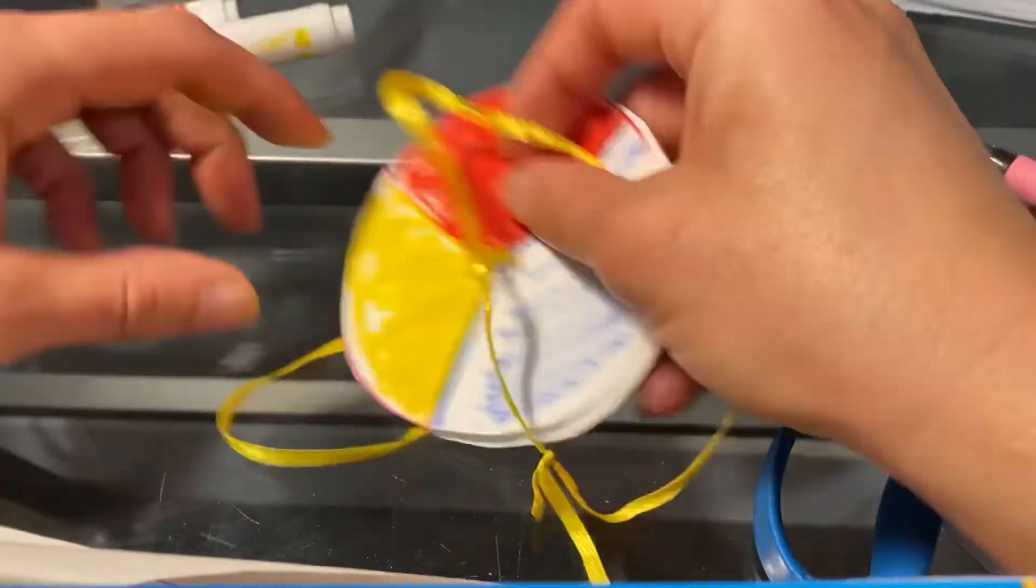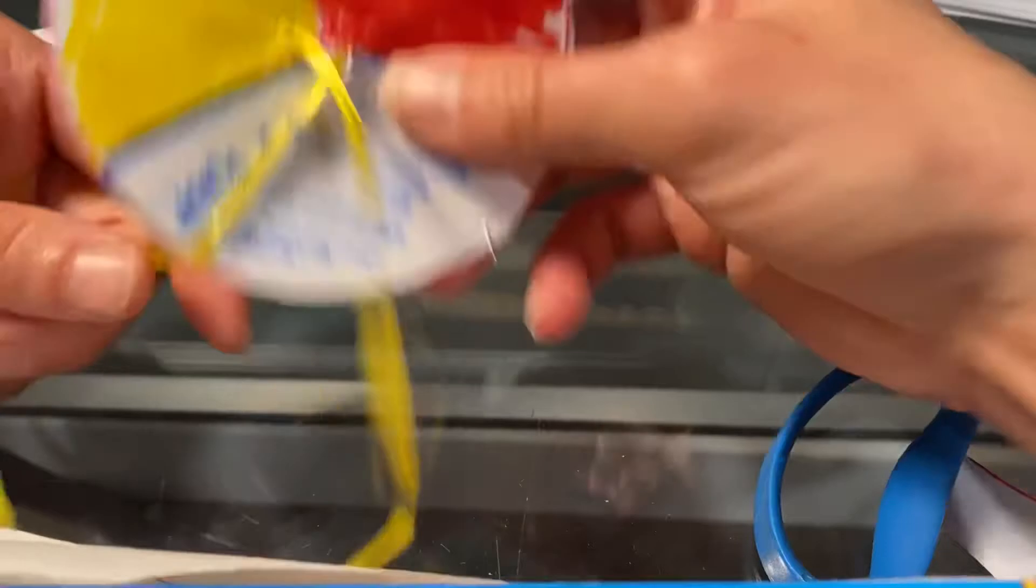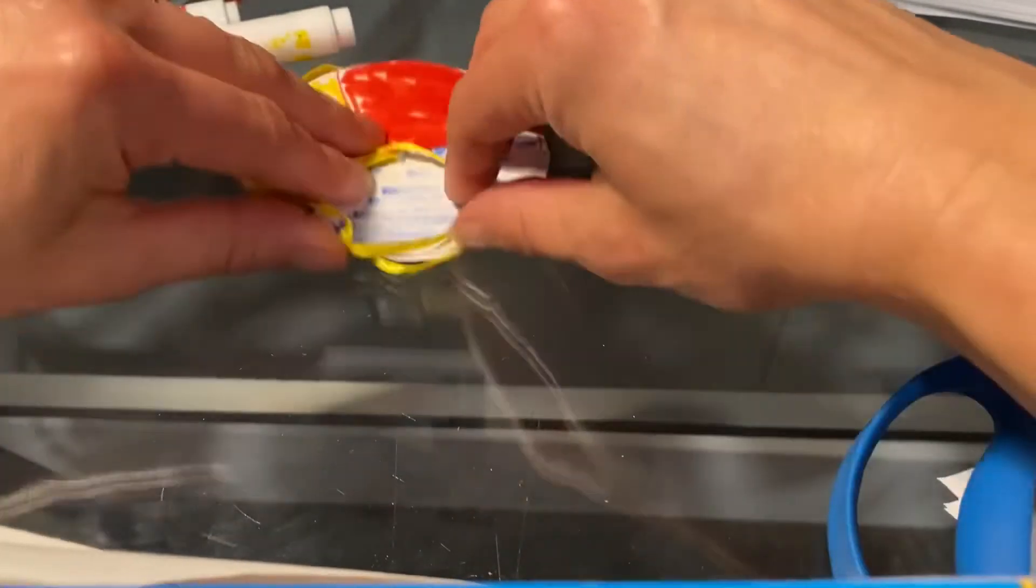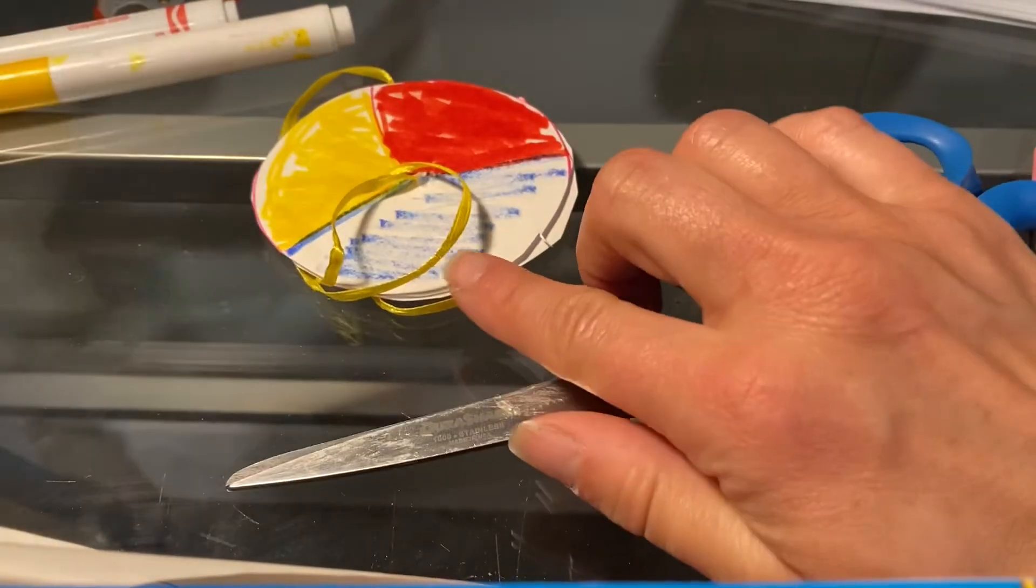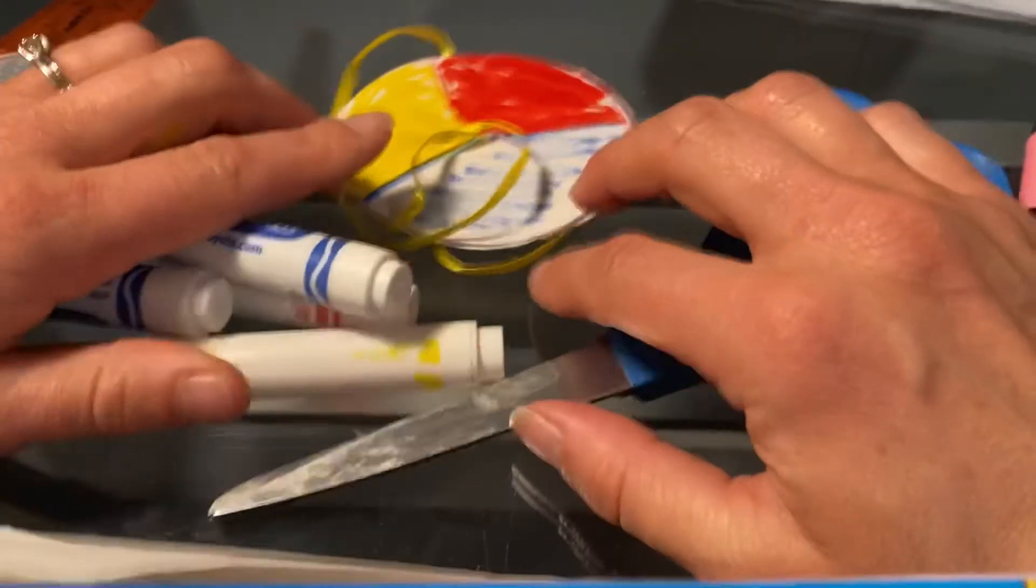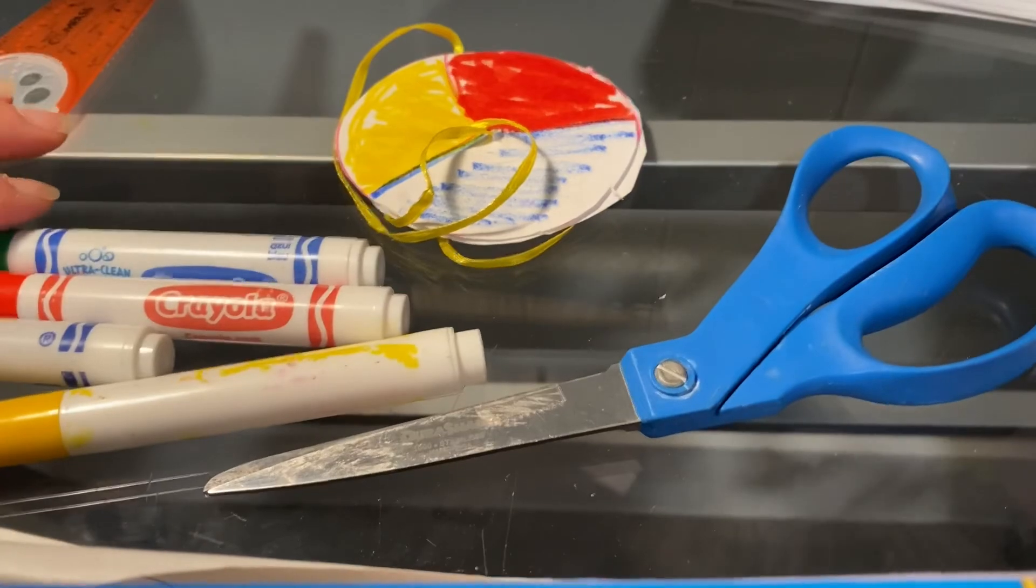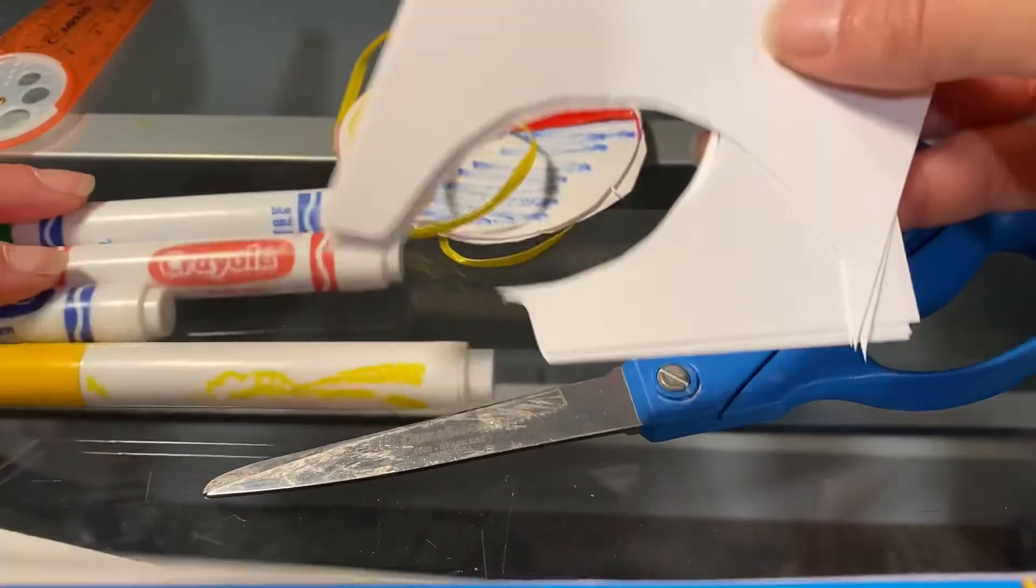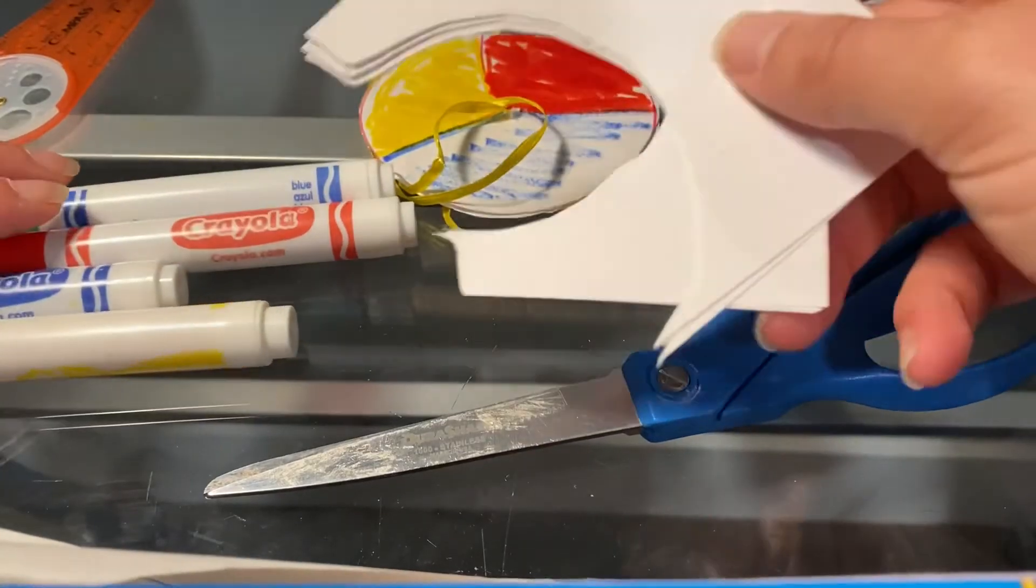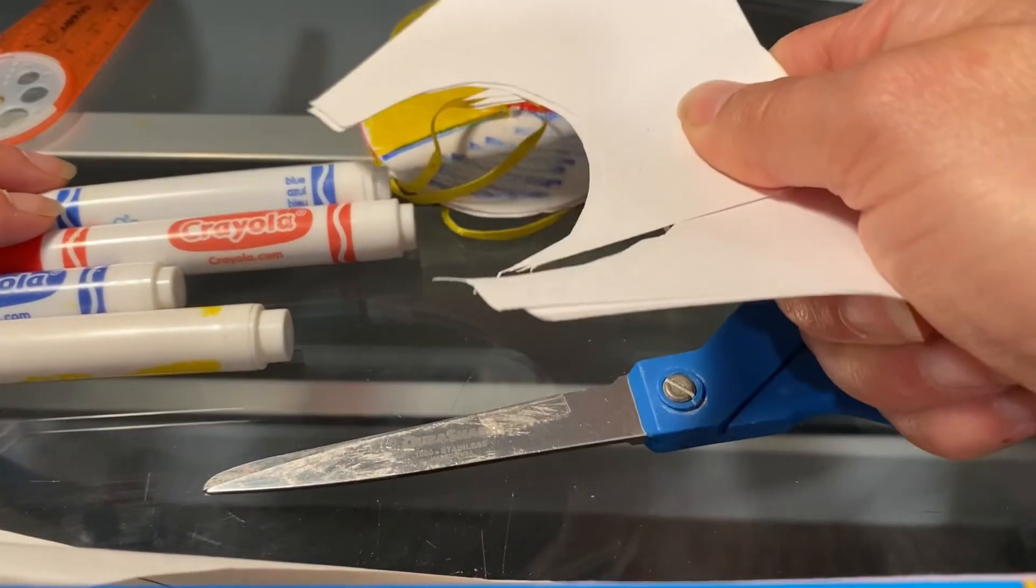When you're done, as always, please, you can hang on to these if you want, bring them home. Maybe you've got little brothers and sisters that can play with them. But again, put your materials away, put the scissors where you got them, put the markers back where you got them. Make sure that you throw your scraps out. These should find their way to the trash cans. Okay. So let's be responsible and take care of our own stuff. All right. Have fun.